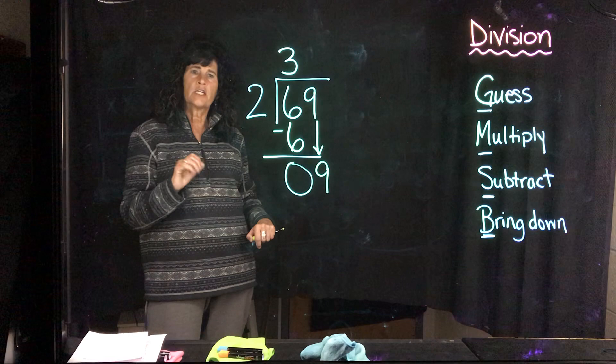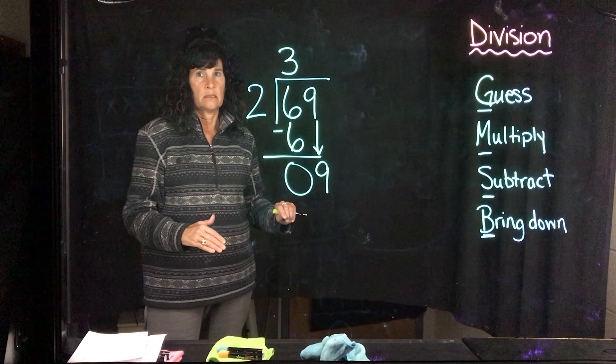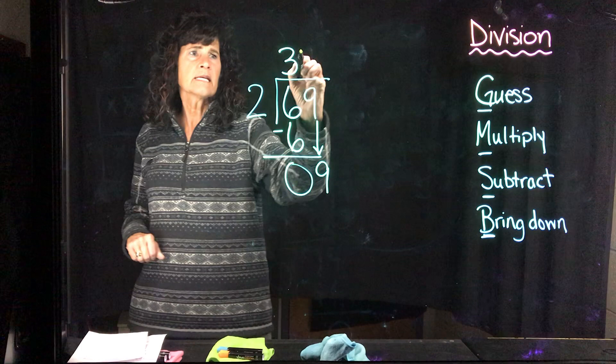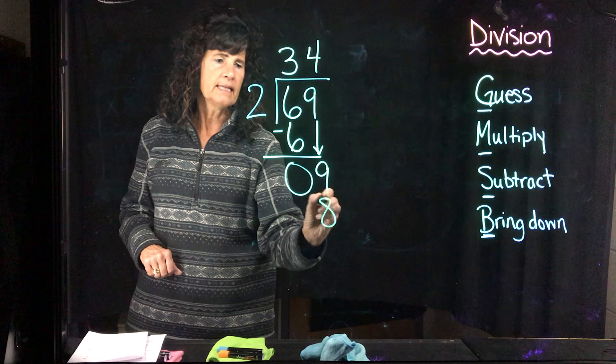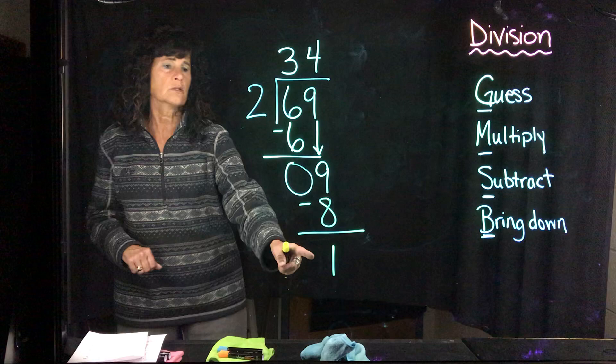How many 2's fit into 9? Now here, I need to figure out how many 2's fit into 9 without going over. Okay? Now, I know that 2 times 4 is 8. So I'm going to guess 4, because that's a number that's close to 9, but not going over. So I'm going to guess 4. I'm going to multiply. 4 times 2 is 8. Subtract. 9 minus 8 is 1. Bring down. Nothing there. So I've got this number left down here. This is called my remainder.